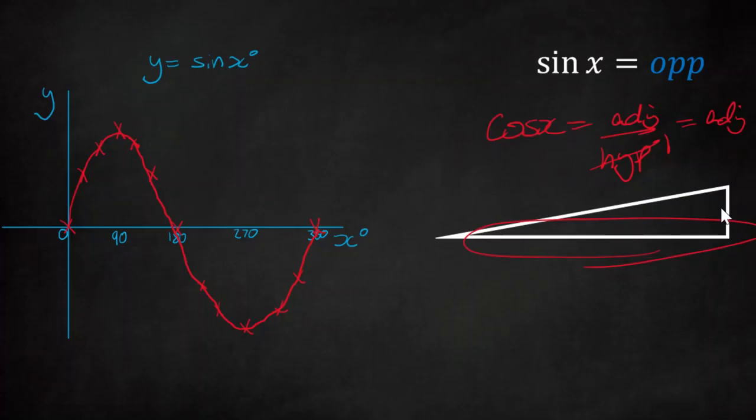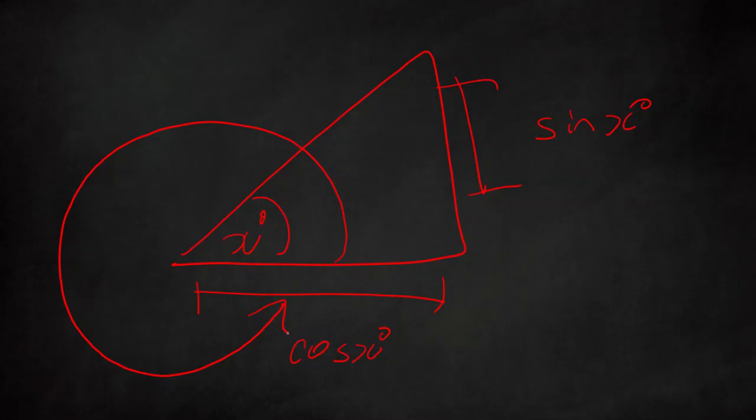This is not a very intuitive process. There's a much better way to see where the graphs come from that for some reason we didn't learn in high school and I didn't come across until I got into university. The opposite side from the angle was sin x, the adjacent one was cos x. Looking at what happens to these two sides as we take the angle from 0 to 360 is how we got the graphs. This is much easier to see and I don't know why it's not taught in high school. I think it's a much more intuitive way to think about it and is much easier to see when we look at what's called the unit circle.